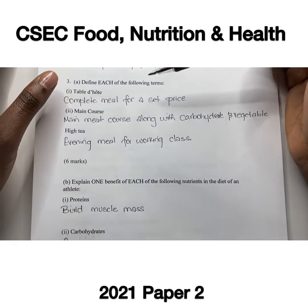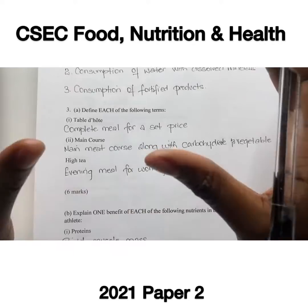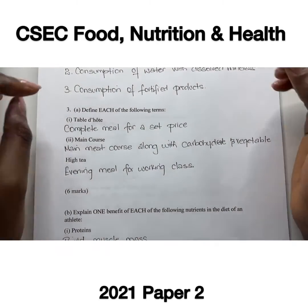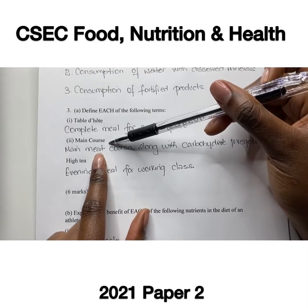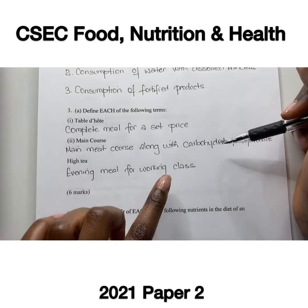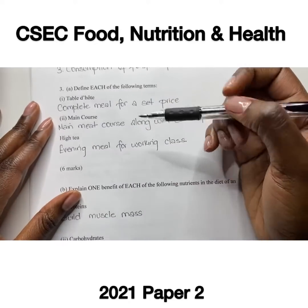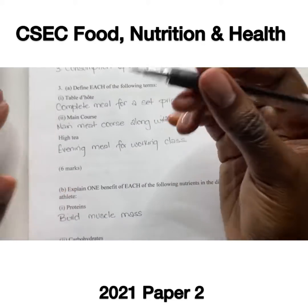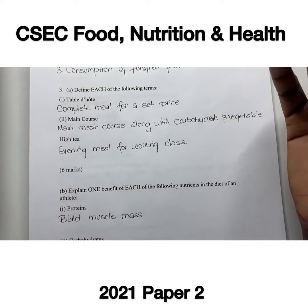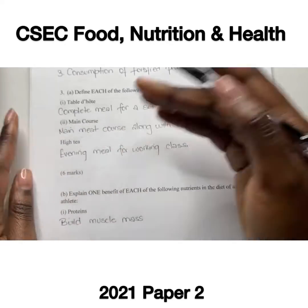Number three again asks students to define some terms. Table d'hôte is a type of menu that provides a complete meal for a set price. The main course is the main meat course offered along with a carbohydrate source and a vegetable dish. High tea is a meal consumed in the evening or late afternoon, consisting of a hot dish, bread, meat, and in some instances, tea.